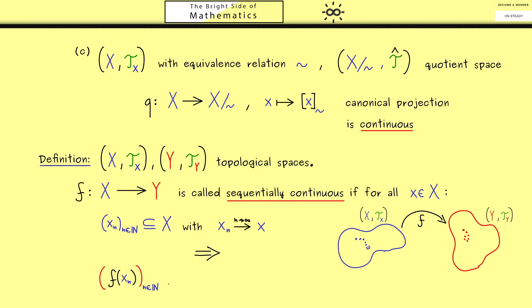So we know this should be the sequence of the images f(x_n), and they live in the set Y. So it should be convergent and the limit of f(x_n) should be the point f(x). So the image of the original point x. Okay, so this is sequentially continuous.